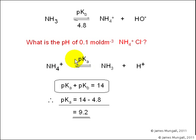Now, what is the pH of a 0.1 mole per decimeter cubed solution of NH4 plus Cl minus, ammonium chloride? We really want to know the Ka value of the reverse reaction, NH4 plus, behaving as a weak acid, and partially dissociating into NH3 and H plus.